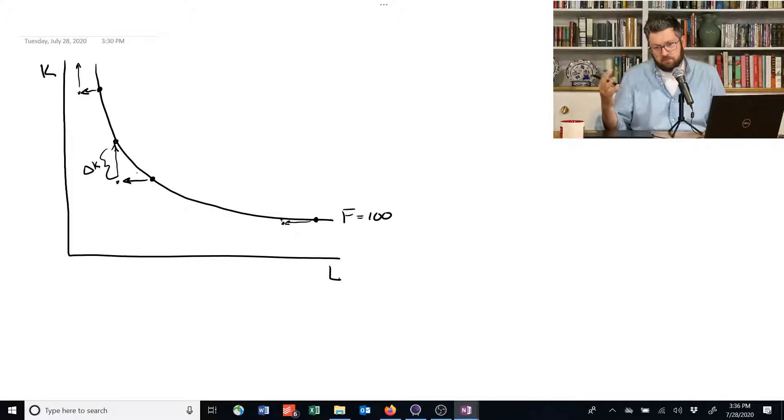In here, it's sort of a moderate amount, and if we're down in this corner, the amount of extra capital we need is a tiny amount. And you can see that this is driven by this kind of curved shape of this isoquant.